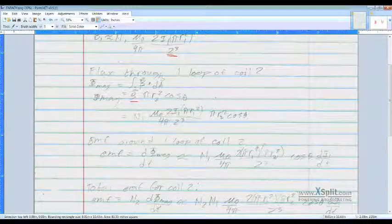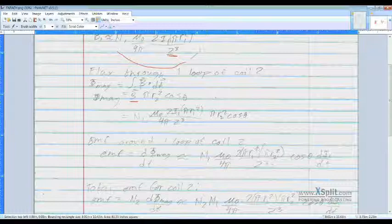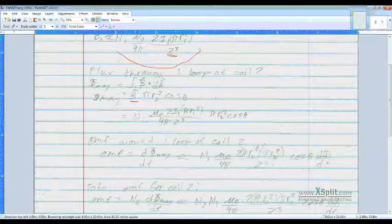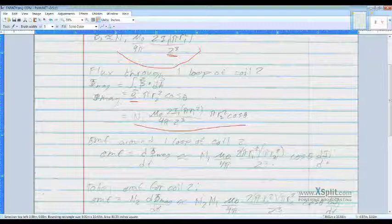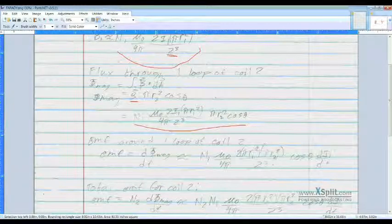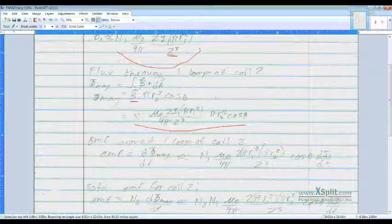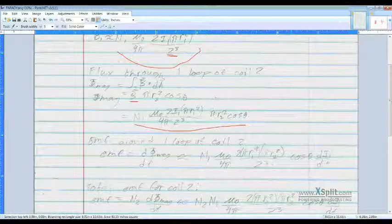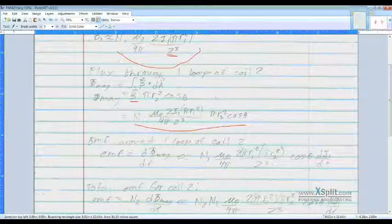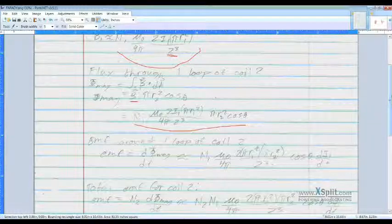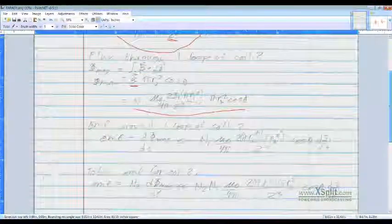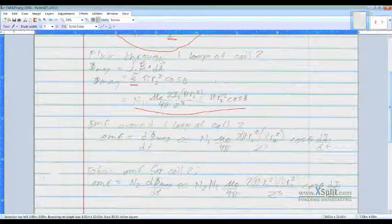So then we can plug in the equation here for B. And it'll give us N1 times mu naught over 4 pi times 2I1 pi R1 squared over Z cubed times pi R2 squared cosine of theta. So now that we have that, we need to find the EMF around one loop for coil 2.